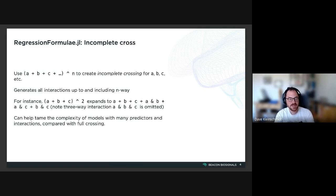The second bit of expanded syntax is this incomplete cross or exponentiation operator. The way this works is that you can have a bunch of terms like a, b, and c, a + b + c plus a bunch of other terms, and then you exponentiate them or raise them to the nth power.